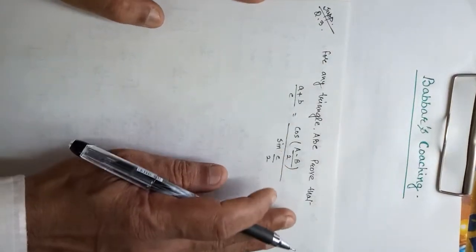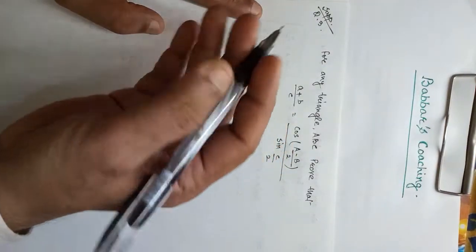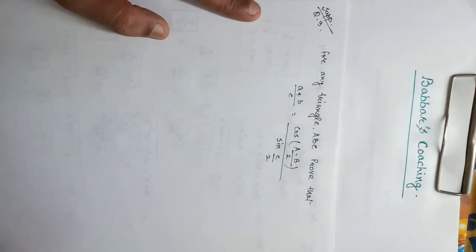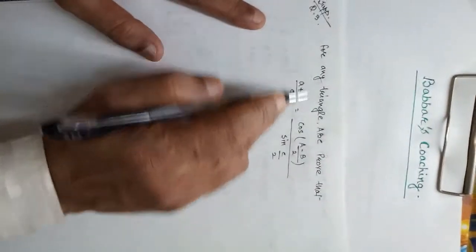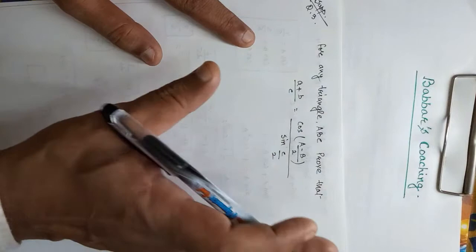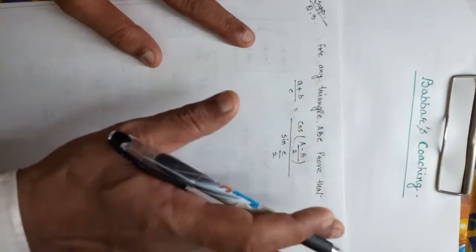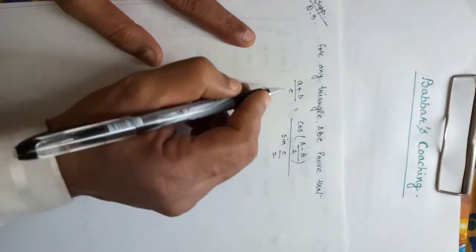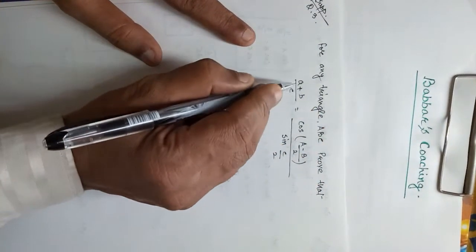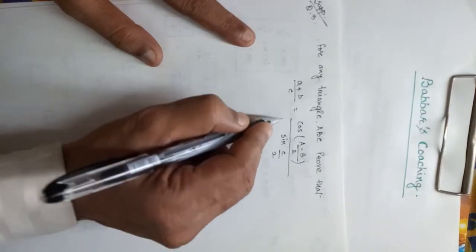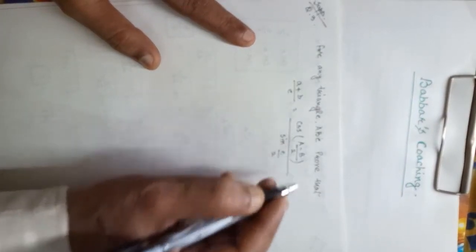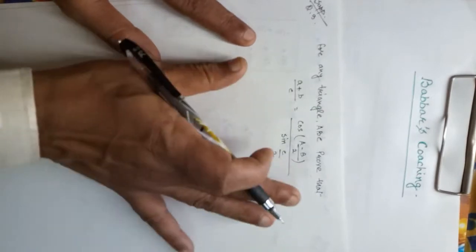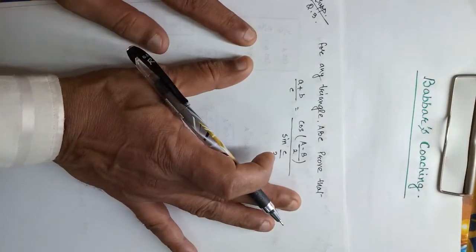Students, in today's video, we are discussing question number 3. In question number 3, we are saying that for any triangle ABC, prove that. We have to prove that in any triangle ABC, A plus B upon C is equal to cos(A minus B) upon 2, divided by sin(C by 2). So we have to prove this.